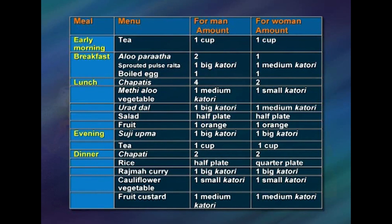For early morning, one cup of tea can be given to both man and woman. For breakfast with alu paratha, sprouted pulse raita, and boiled egg: man can be given two parathas and woman one, sprouted pulse in a big katori for man and medium katori for woman, and one boiled egg each. For lunch with chapatis, methi alu vegetable, urad dal, salad, and fruit: four chapatis for man and two for woman, methi alu in medium katori for man and small katori for woman, urad dal in big katori for man and medium katori for woman, and half plate of salad each.